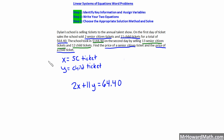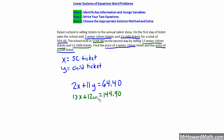Now let's write our second equation. The school took in $144.90 on the second day by selling 13 senior citizen tickets and 12 child tickets. So our total is $144.90. Remember, when we're using matrix we want to make sure and stack our constants, our Y values, and our X values. So we write 13X plus 12Y equals $144.90. There are our two equations and step two is now done.